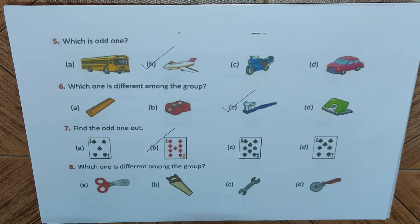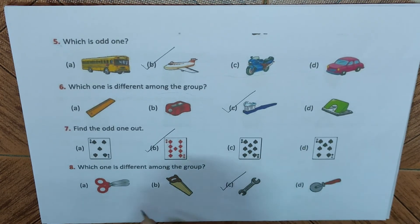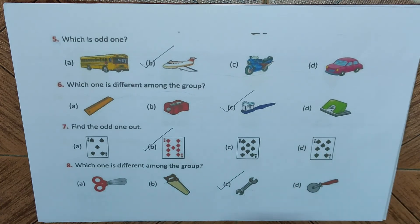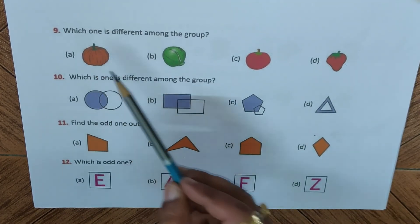Question number eight: which one is different? We have a scissor, a saw, a spanner, and a pizza cutter. Options A, B, and D can be used for cutting things, whereas the spanner is used for pulling screws from their joints — so the spanner is the odd one out.